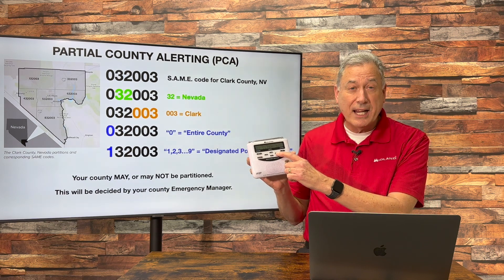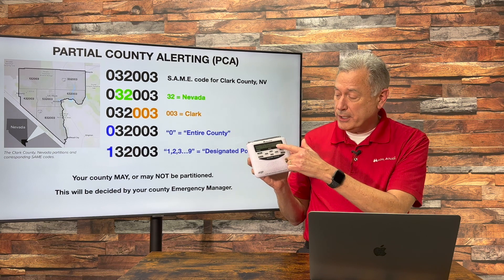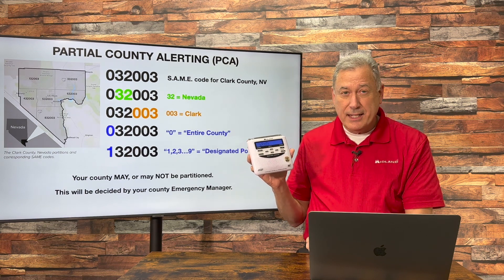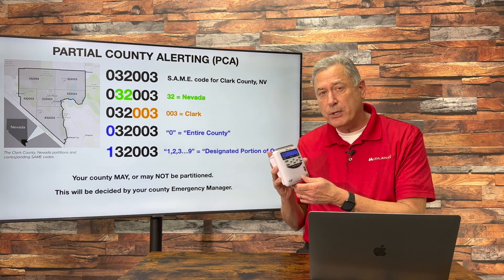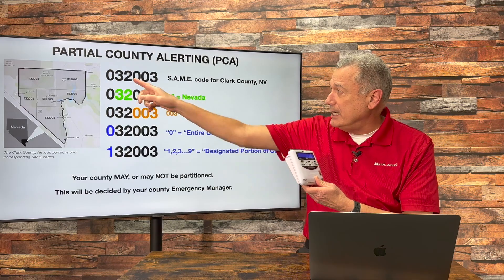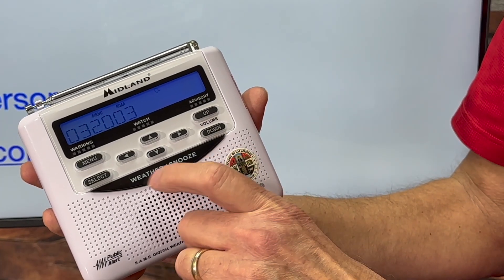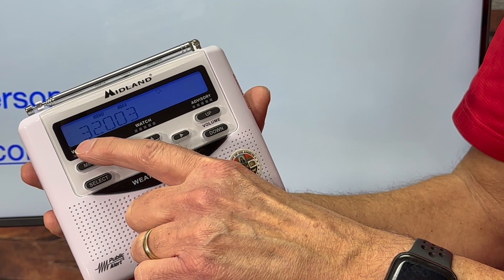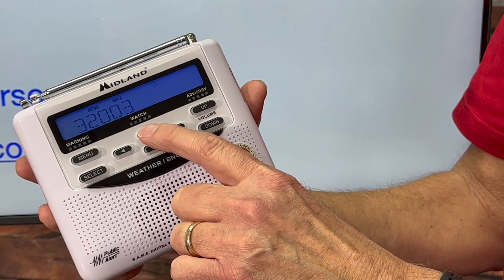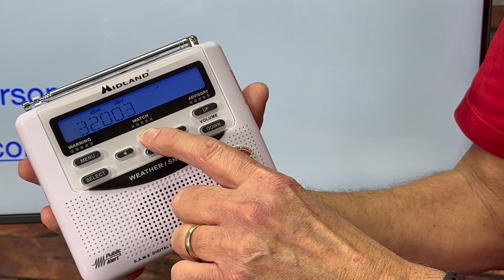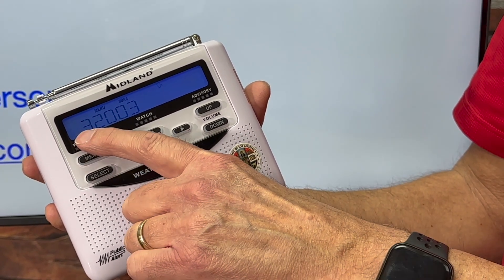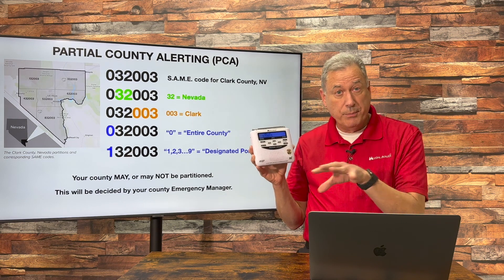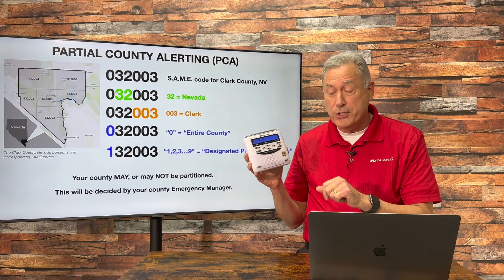This right arrow — once it says Clark County, Nevada — press the right arrow. And now it changes Clark County, Nevada, into that code right there: 032-003. The first digit is blinking. So now you use your up or down arrows, and you change that first digit to whichever portion of the county that you're in.